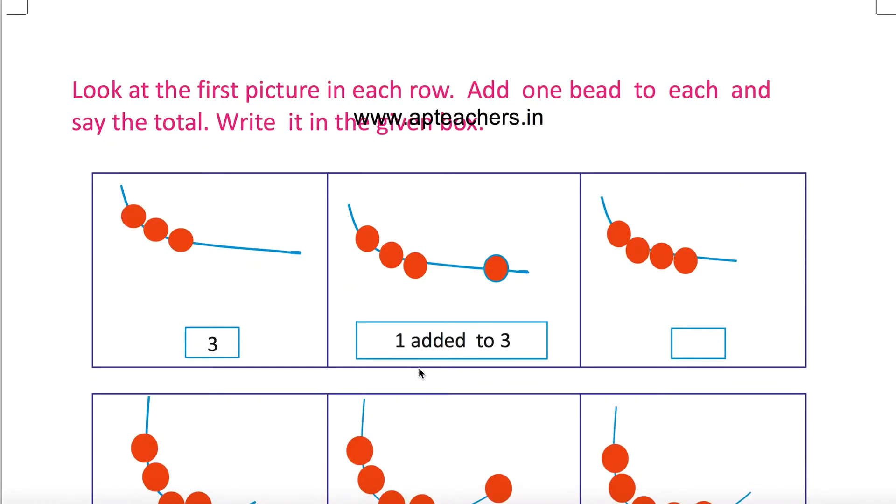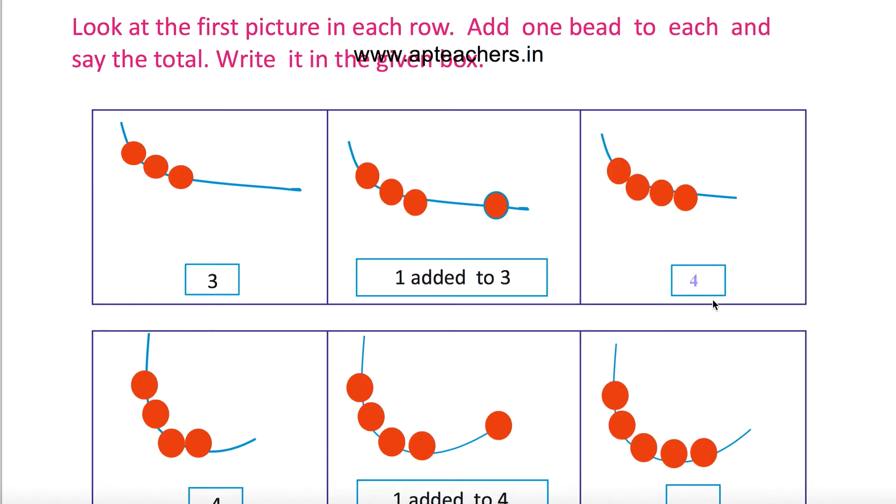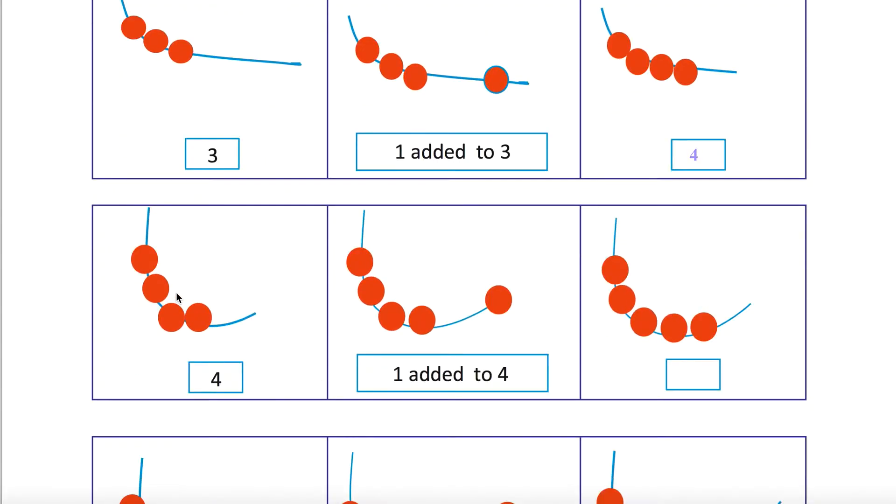Look at the first picture in each row. Add one bead to each and say the total. One added to three, how much will it become? Four. Now four beads are there, one more added. How many is it? It becomes five.